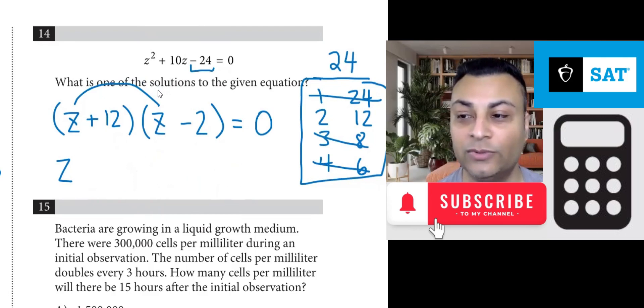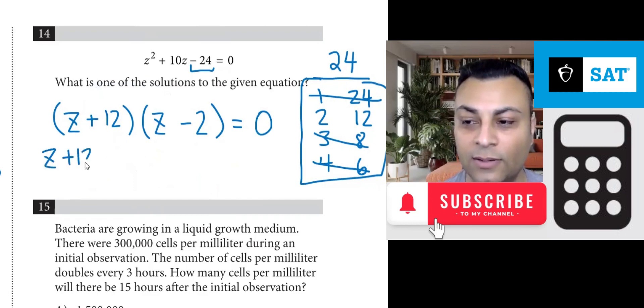From here we use the zero product property. We say z plus 12 could be 0 or z minus 2 could be 0.